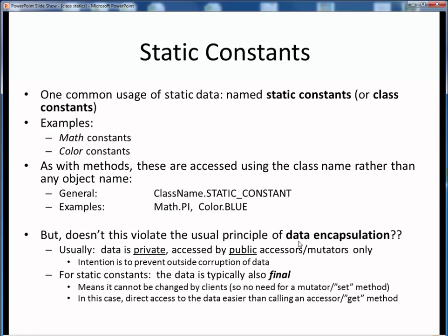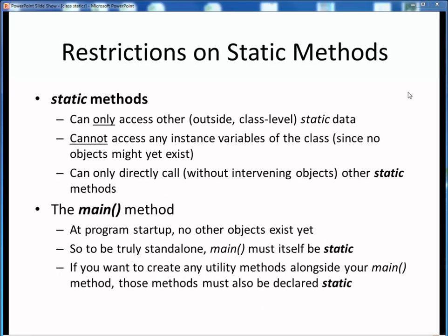It turns out that here for static constants, we are still maintaining the spirit of data encapsulation by typically always declaring such data as final, which means that once its value is set internally it cannot be changed. So even for static constants, even though we reference them by name directly without using accessor or get methods, we also can't alter their values anyway by using mutator or set methods. We do this simply because in such cases it's often just easier to have direct access by name to such constant data.